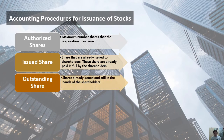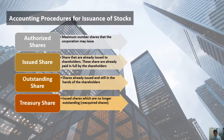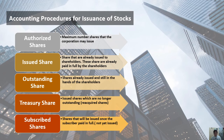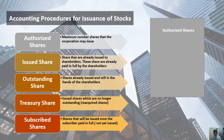Under issued shares, we have outstanding shares — shares issued and still in the hands of the shareholders. If shares are issued but no longer in the hands of the shareholder, they are called treasury shares, which are issued shares that are no longer outstanding — also known as reacquired shares. Last, we have subscribed shares — shares which can only be issued once the subscribers pay in full. These are not yet issued shares but are still part of the capital stock of the corporation.